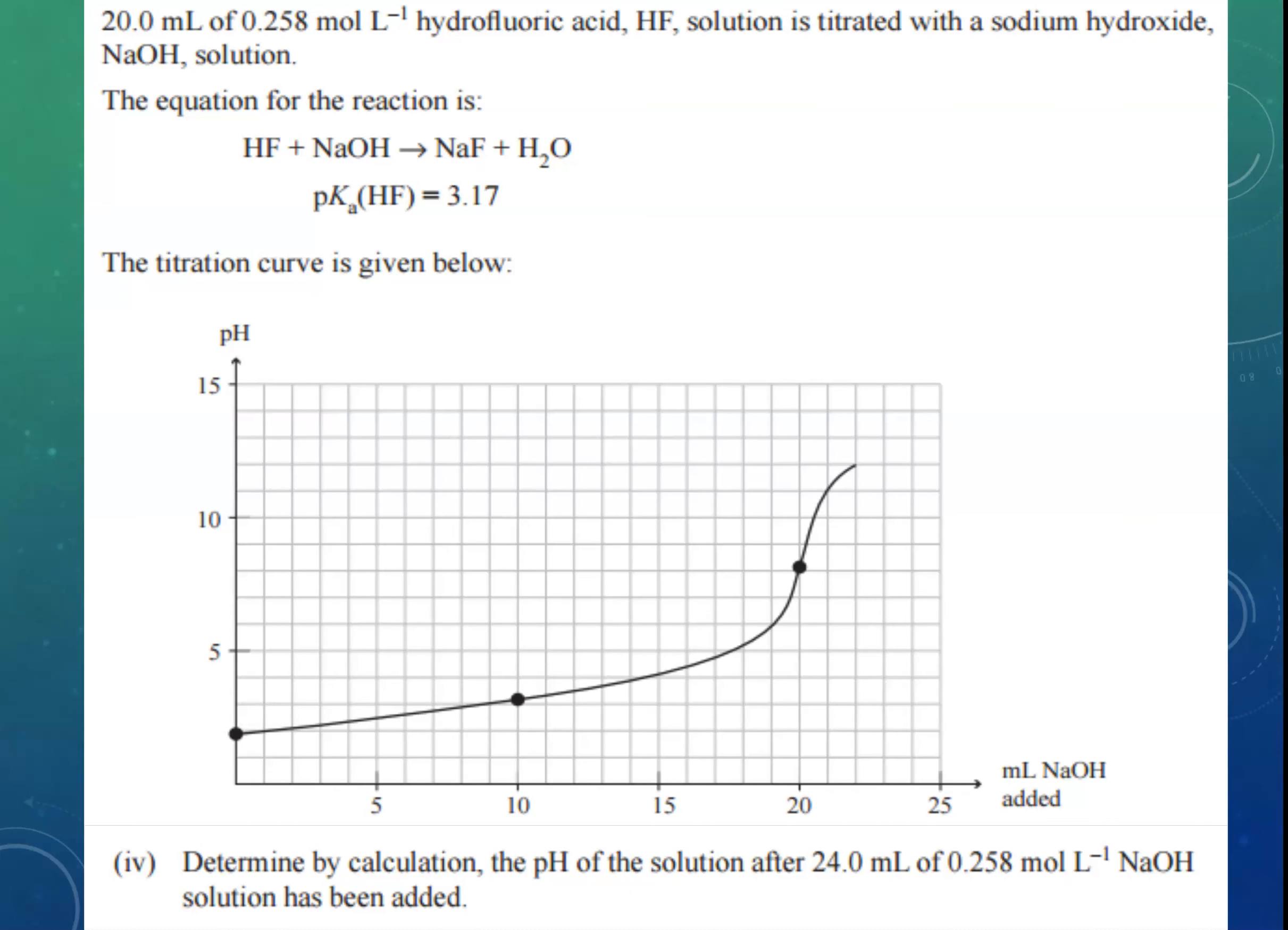Okay, here's the final calculation that I really want to throw in here. And this is the pH beyond the equivalence point. It's kind of nasty in its thinking, but the actual calculation is really easy once you've thought through it. Okay, so this is back to our hydrofluoric acid example, which I used in the last video. This is another part of that same question. We've got the titration curve, and the question this time is, what is the pH once we've added 24 mL of sodium hydroxide?